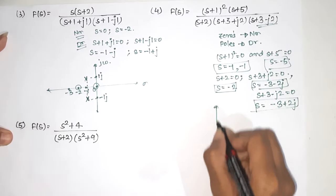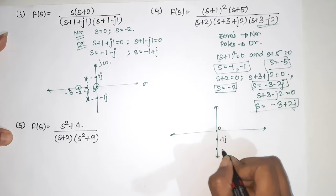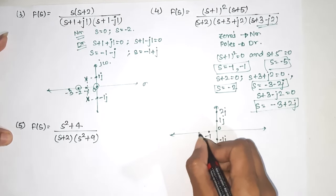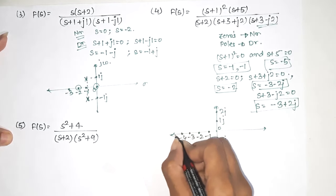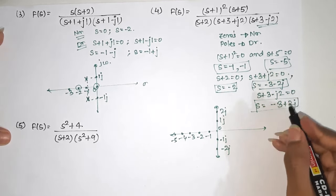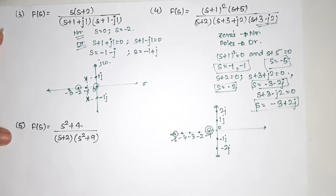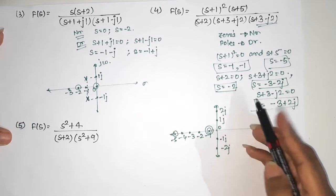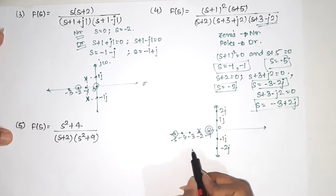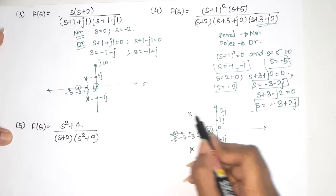Let us plot this. On the sigma-jω axes, zeros at -1 (double-circle) and -5 are marked. Then pole at -2 is marked with a cross. The complex poles at -3-2j and -3+2j are marked in the lower and upper half of the complex plane respectively.